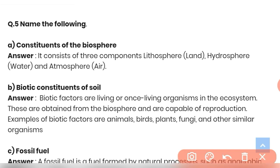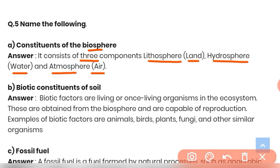Question 5 (a): Name the constituents of the biosphere. The biosphere consists of three components: the lithosphere, which means land; the hydrosphere, which means water; and the atmosphere, which means air. These are the main constituents of the biosphere.